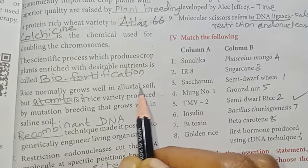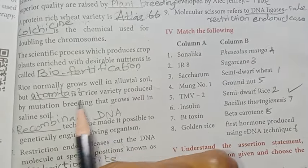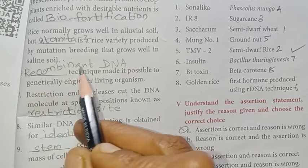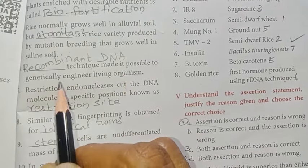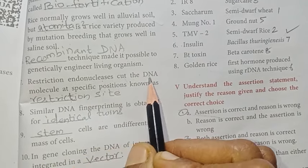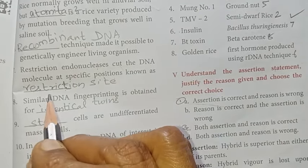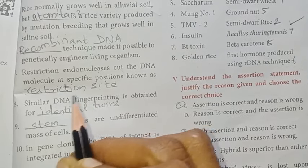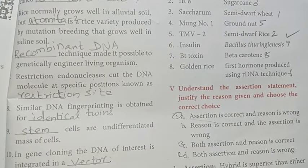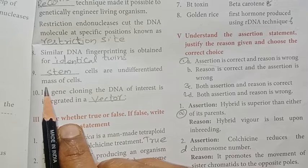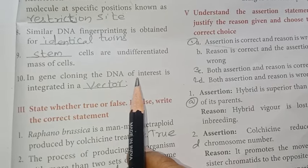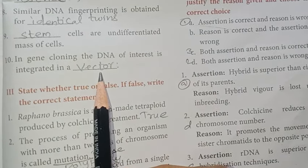Fifth: Rice normally grows well in alluvial soil, but Automata 2 is a rice variety produced by mutation breeding that grows well in saline soil. Sixth: Recombinant DNA technique made it possible to genetically engineer living organisms. Seventh: Restriction endonucleases cut the DNA molecule at specific positions known as restriction sites. Eighth: Similar DNA fingerprinting is obtained for identical twins. Ninth: Stem cells are undifferentiated mass of cells. Tenth: In gene cloning, the DNA of interest is integrated in a vector.